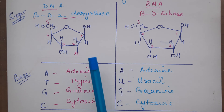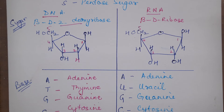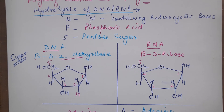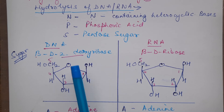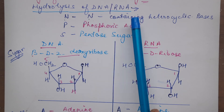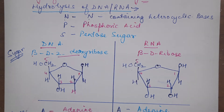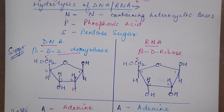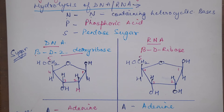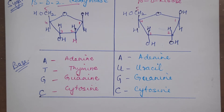So to summarize, both RNA and DNA have three components when hydrolyzed — NPS: nitrogenous base (nitrogen-containing heterocyclic base), phosphoric acid, and pentose sugar. I told you what sugar and what bases are present in RNA and DNA. Now let us see how phosphoric acid is attached.